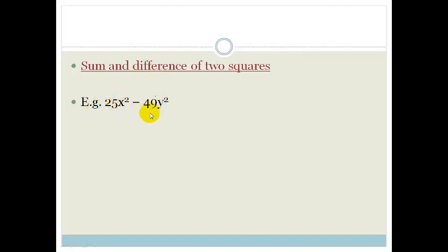The next thing that we generally look for is the difference of two squares. And some of you may have heard of it called DOTS, the difference of two squares. So, if you've got one perfect square and another perfect square, and they're separated by a minus sign, then you've got the difference of two squares.